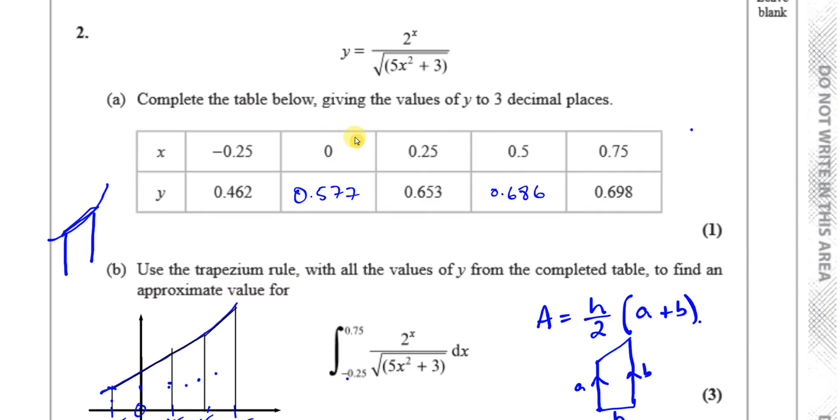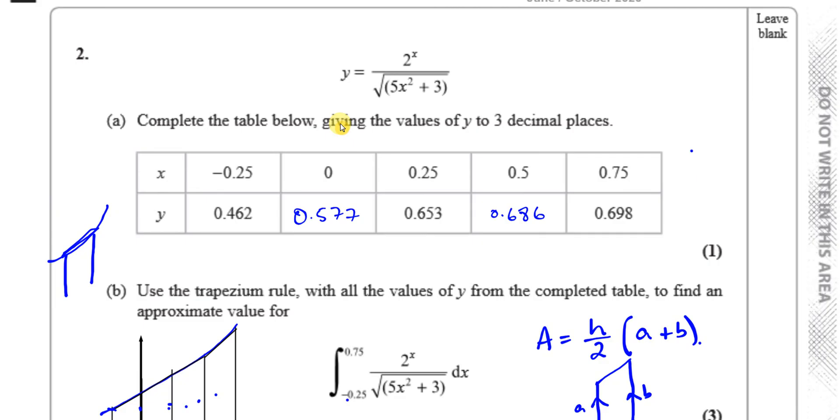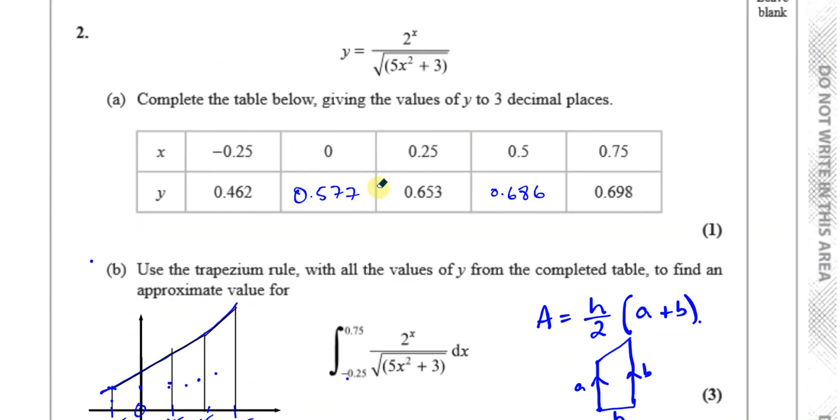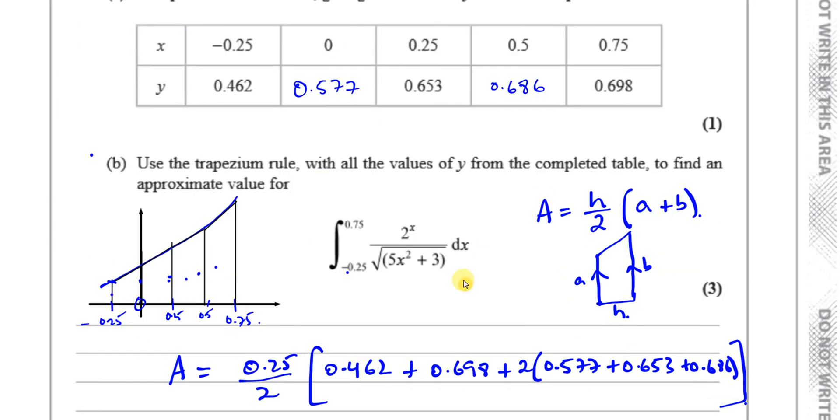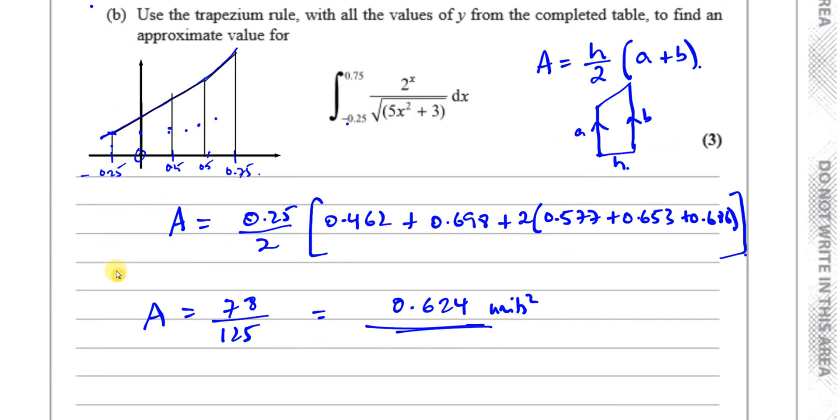Now this question doesn't actually ask us, but sometimes they do say is your answer an overestimate or an underestimate. We can see that for the x values we've got, the y values are increasing so it's kind of going like this, curving upwards. In this particular case I would say it's an overestimate. Normally they would ask that question if they gave you the shape of the curve. To be honest it might not actually be exactly that shape. We'd have to plot it to see, which we're not required to do. So there's the answer to question number 2, that's complete.